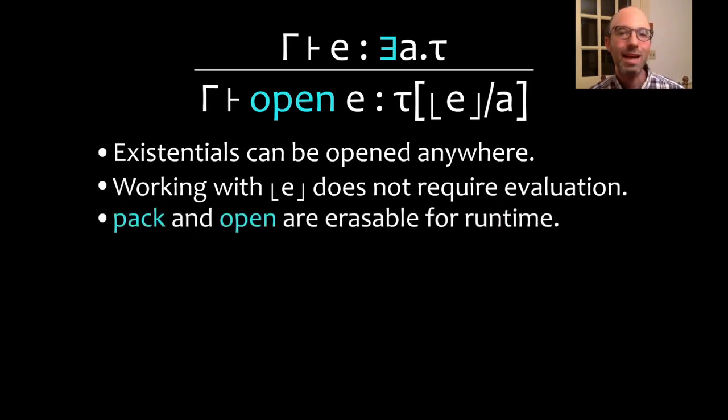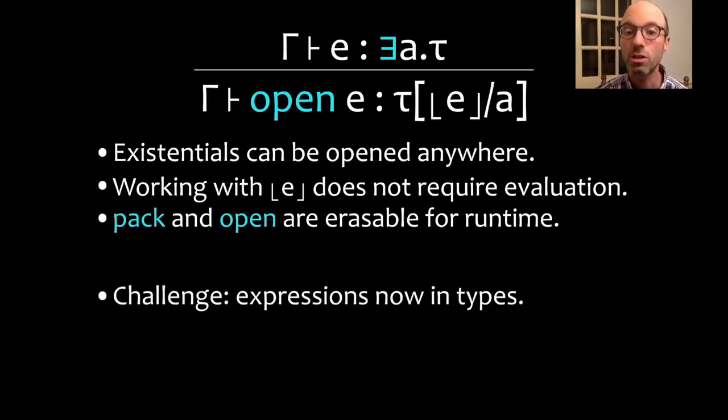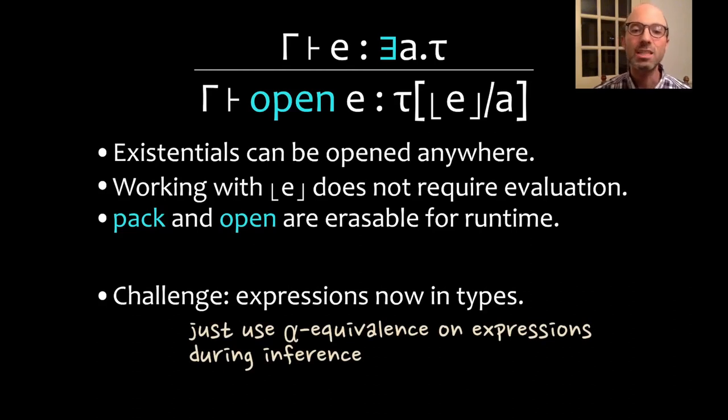Pack and open - I haven't mentioned pack. Pack is the way that we create existentials and it's quite standard. Pack and open are erasable at runtime here. That again means we don't change our runtime evaluation in order to satisfy compile-time properties. There is a challenge here in that expressions E can appear in types. Because of this challenge, we need to now define what it means for expressions to be equivalent when we're doing type equality. For now we can just use alpha equivalence. It turns out a richer notion of equality on expressions, like full beta equivalence, is fully compatible with our ideas, but we don't need that. So for now we'll just stick with alpha equivalence.